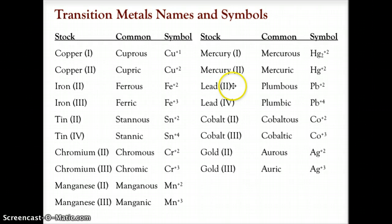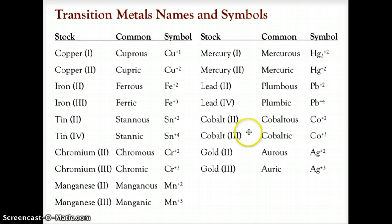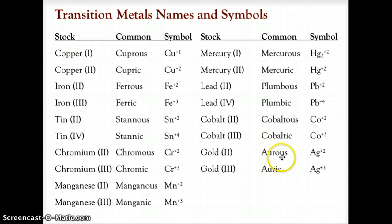Lead has two varieties — plus-two and plus-four: plumbous and plumbic, plumbous being the plus-two and plumbic being the plus-four. Cobalt also has two varieties, plus-two and plus-three: cobaltous and cobaltic. Gold comes as gold(III), auric, and gold(I) would be aurous.